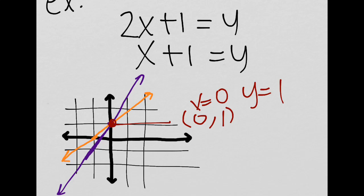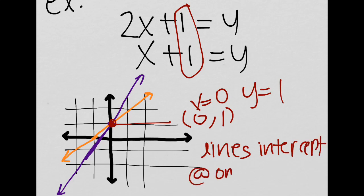One thing I could have realized before I graphed it is that they both have the same y intercept, and that's the only point where lines intersect. Remember, lines intersect at only one point.